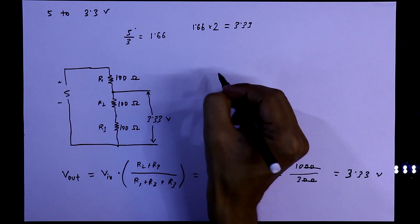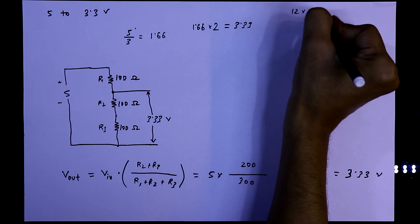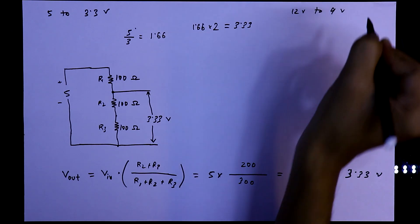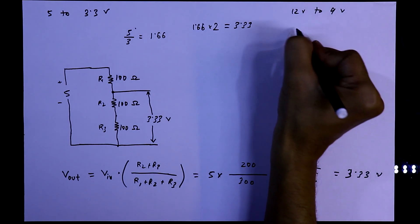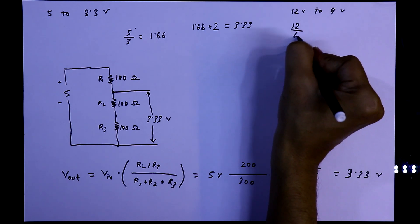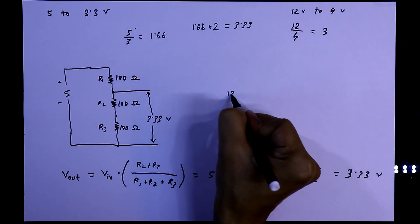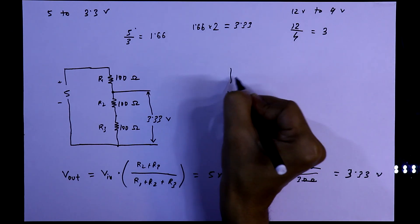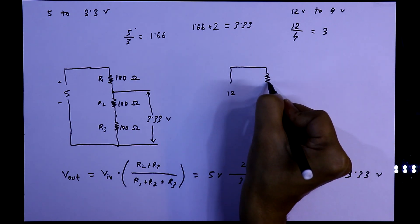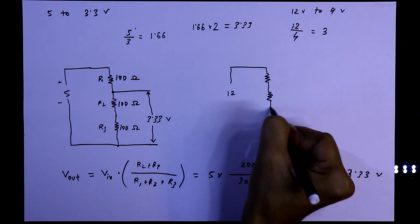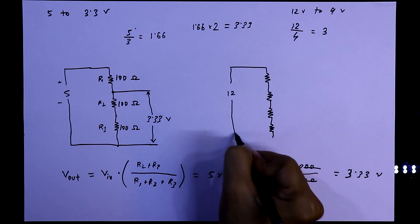If someone says convert 12 volt to 9 volt, then just divide 12 volt by 4. That means 12 divided by 4, it is 3. So 12 divided by 4, so we need 4 resistors in equal values.